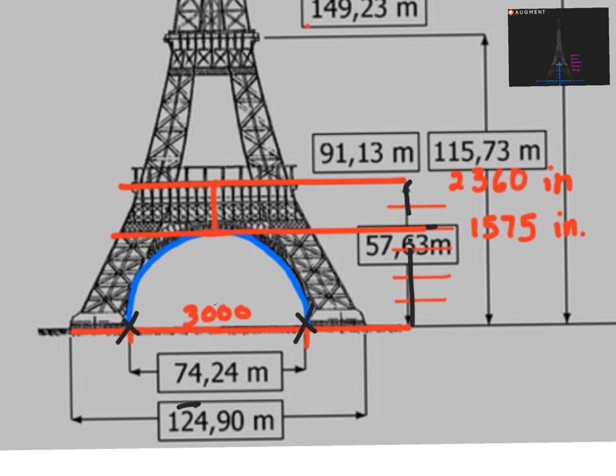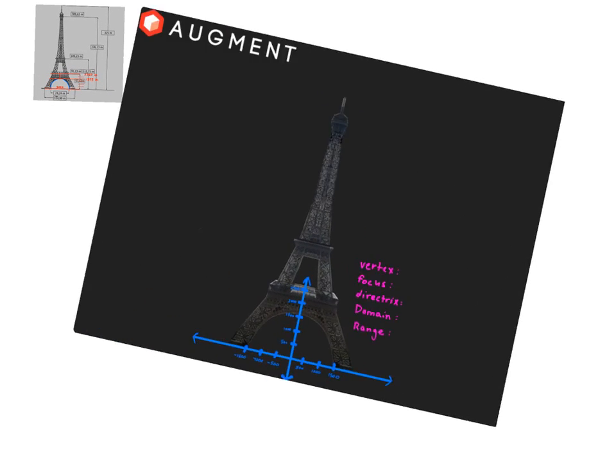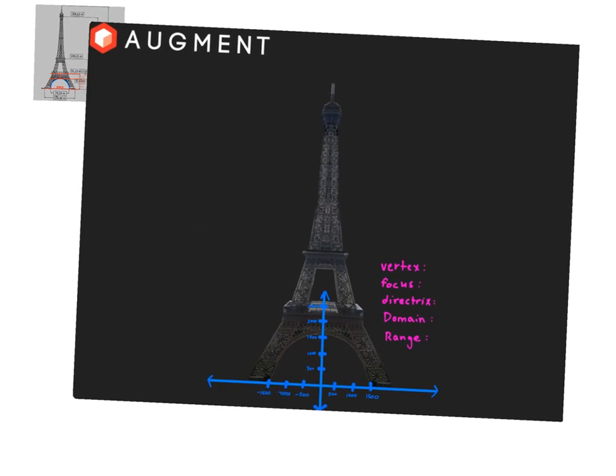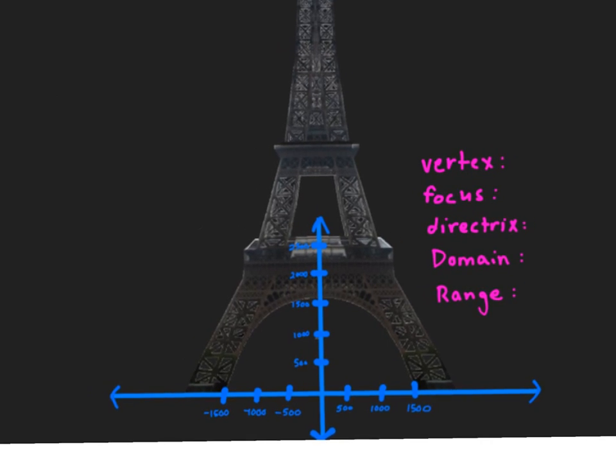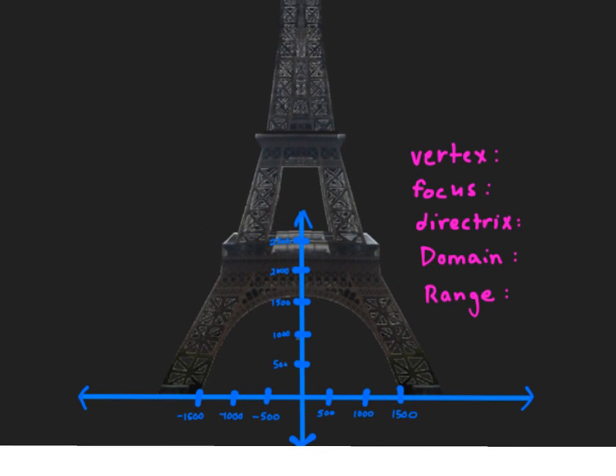So now we're going to get into more of the math part of it. So I already hashed this graph off. I'm going to blow it up a little bit. As you can see on the right hand side we need to find the vertex, the focus, the directrix, the domain, and the range.